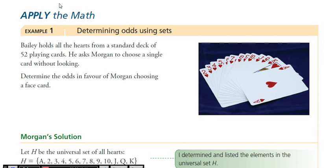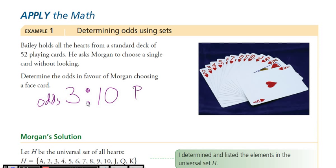Determine the odds: Bailey holds all the hearts from a standard deck of 52 cards. How many hearts are there? 13. He asks Morgan to choose a single card without looking. Determine the odds in favor of Morgan choosing a face card. How many face cards are there? Three — that's favorable. How many unfavorable cards? 10. So the odds in favor of choosing a face card are 3 to 10. What's the probability of choosing a face card? Three out of 13 — favorable over total.